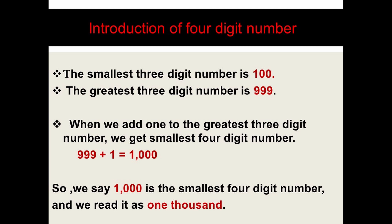So how is a four digit number formed? When we add one to the greatest three digit number, we get the smallest four digit number. Taking 999 and adding 1, we get one thousand — 1000. You can see the units place is 0, tens place is 0, hundreds place is 0, and the fourth digit, the thousands place, is 1.